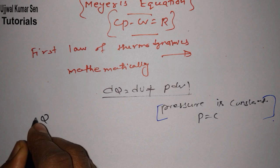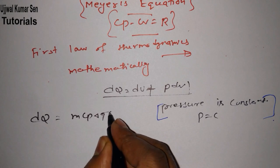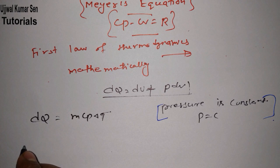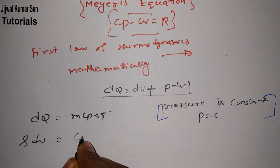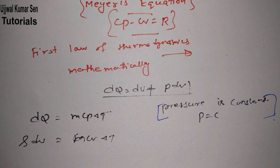We know that Q is equal to dQ is equal to m Cp delta T if pressure is constant, Cp delta T. Again dU is equal to m Cv delta T.